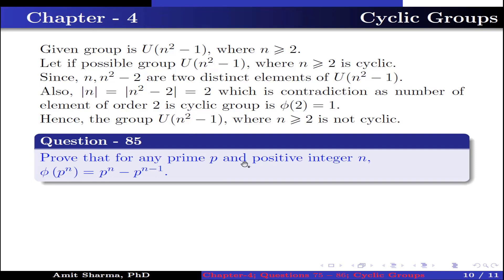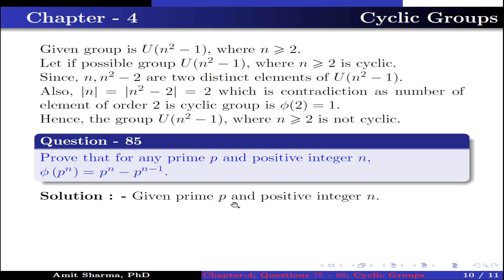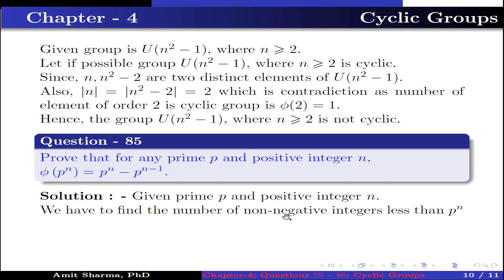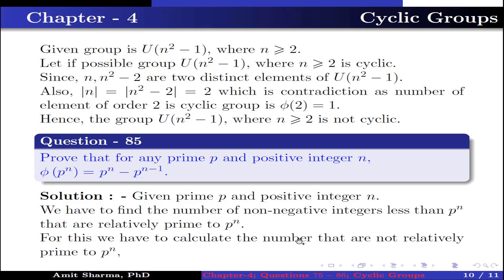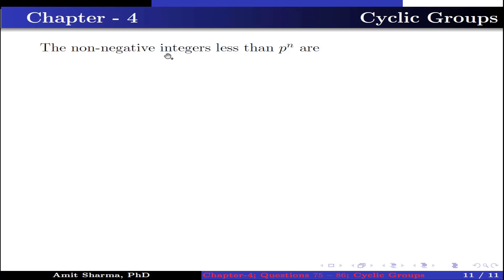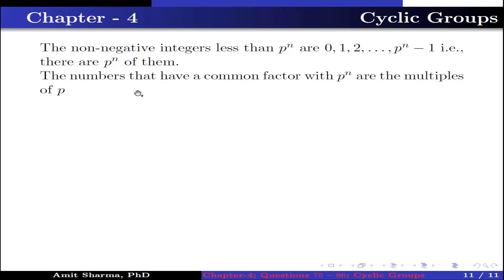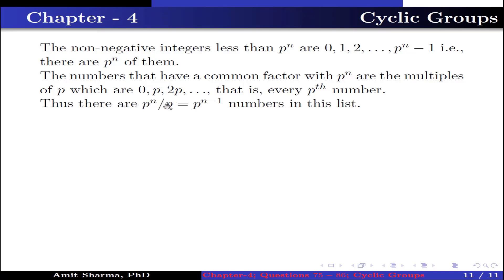Question number 85. Prove that for any prime p and positive integer n, φ(pⁿ) = pⁿ − pⁿ⁻¹. We count the non-negative integers less than pⁿ that are relatively prime to pⁿ. The integers from 0 to pⁿ−1 total pⁿ. Those sharing a common factor with pⁿ are multiples of p: 0, p, 2p, …, giving pⁿ/p = pⁿ⁻¹ such numbers. Hence φ(pⁿ) = pⁿ − pⁿ⁻¹.